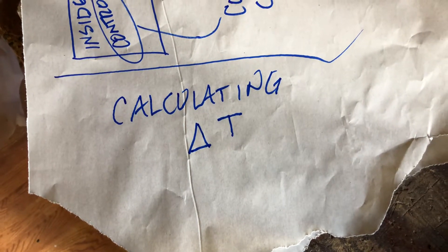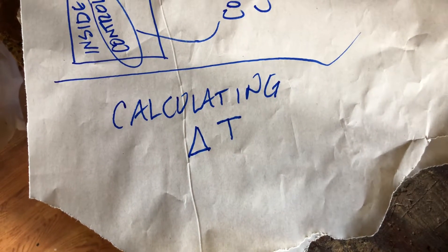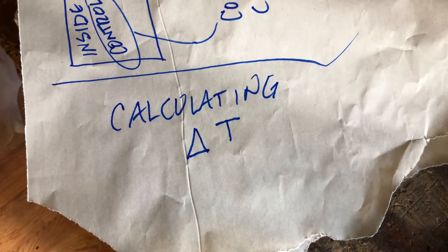Hi folks. In this little video we're going to talk about calculating delta T. Delta T is just the difference in temperature between our desired indoor temperature and whatever the outdoor temperature is. I'm going to do a few little problems so you can see how to do that.